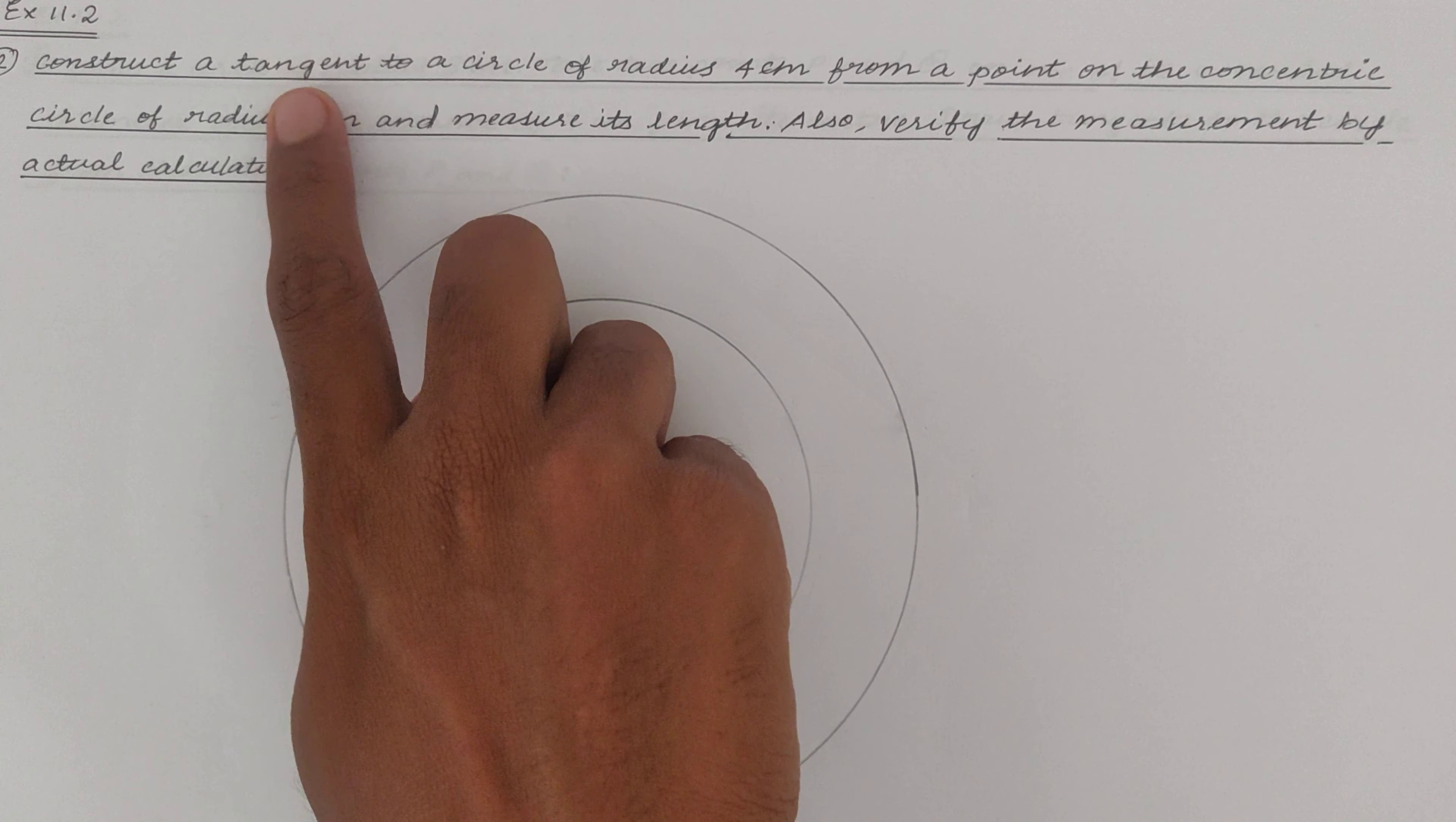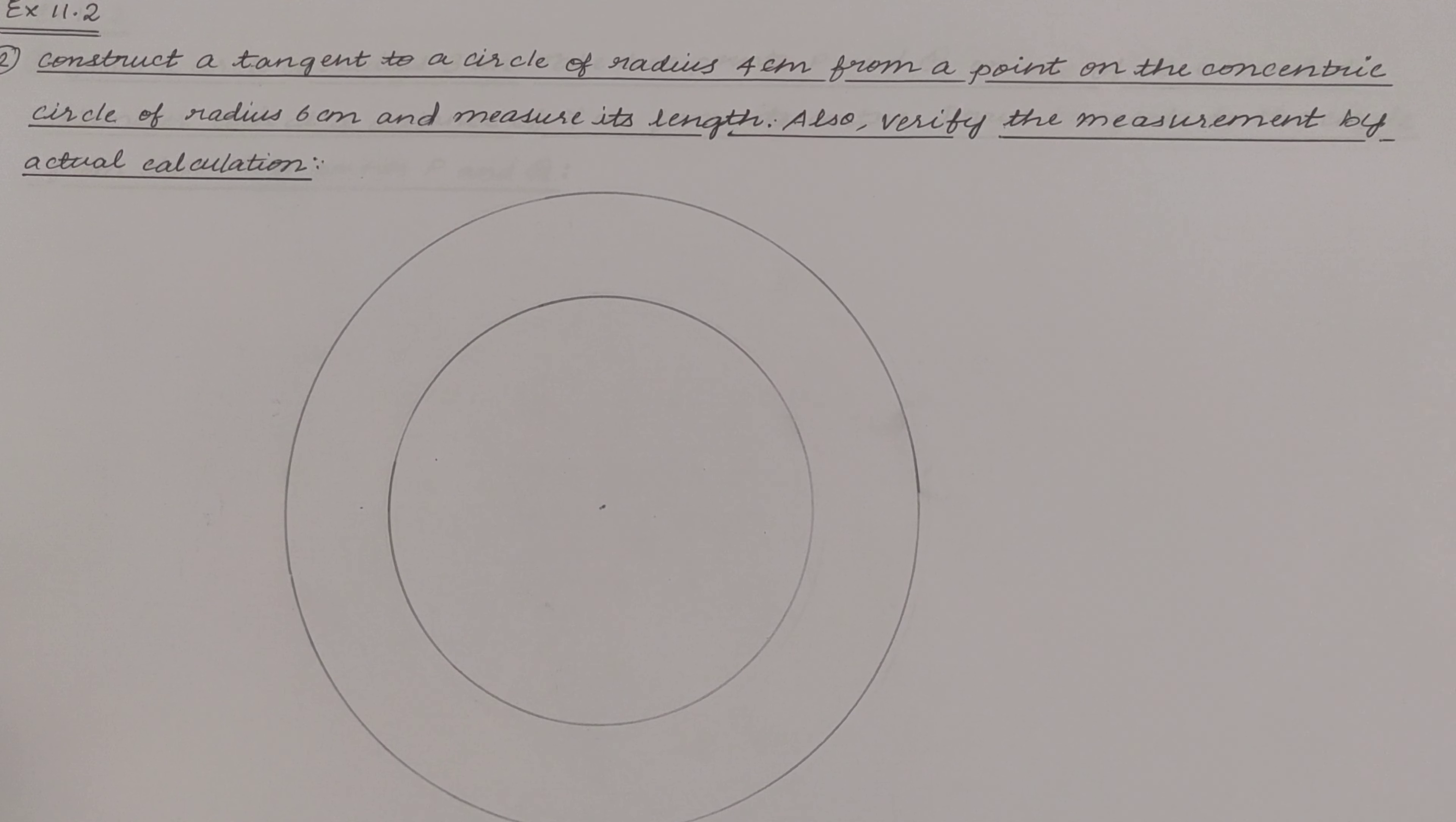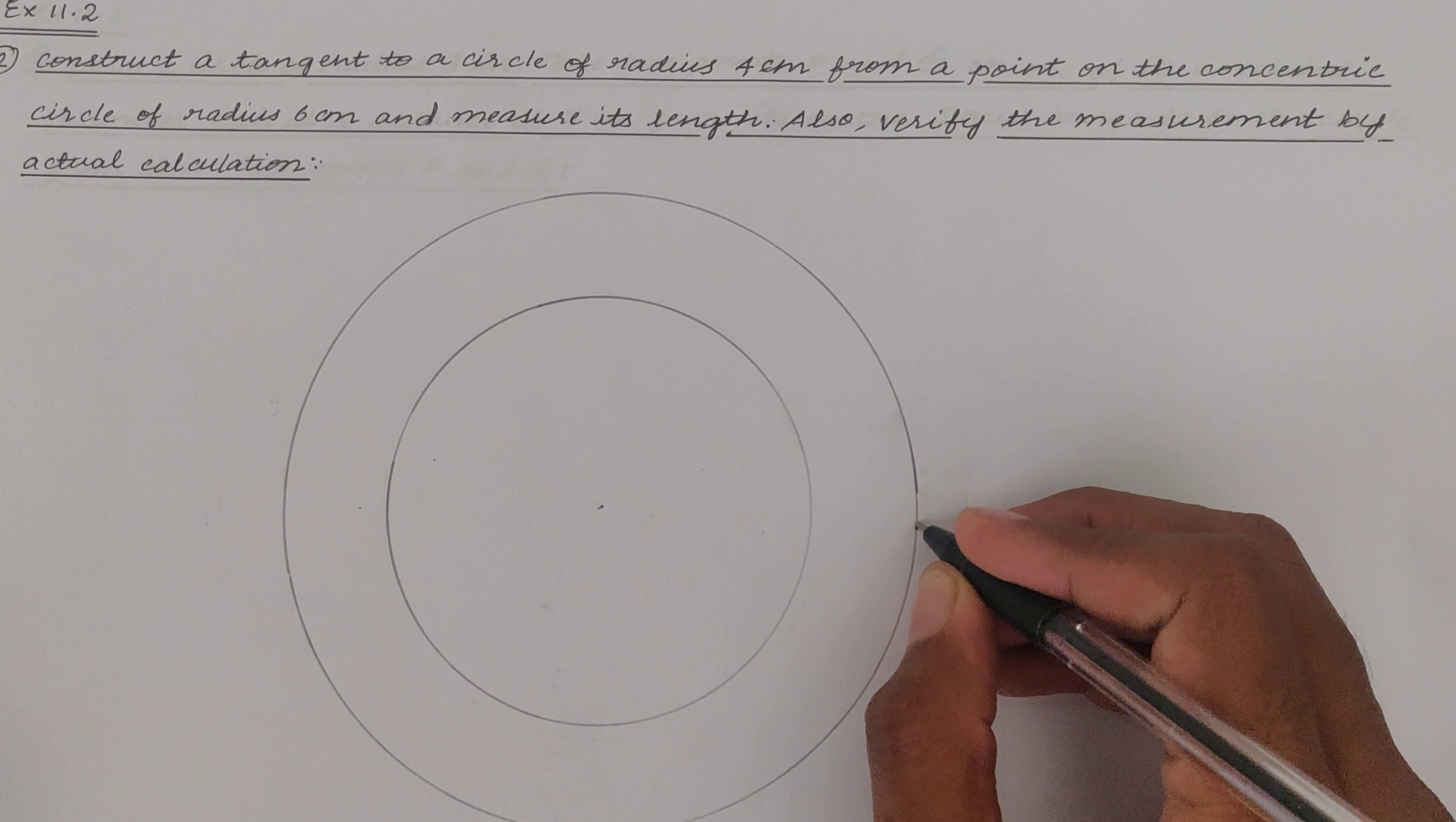Now what we have to do is construct a tangent to the circle of radius 4. So we have to draw tangents to this circle whose radius is 4 centimeters from a point on the circle of radius 6 centimeters. So we have to take a point in the outer circle.